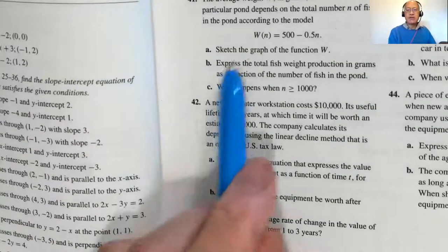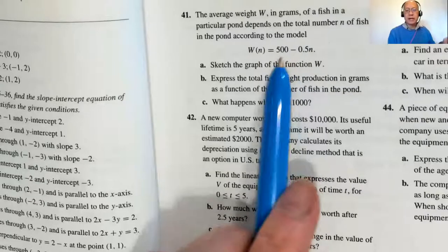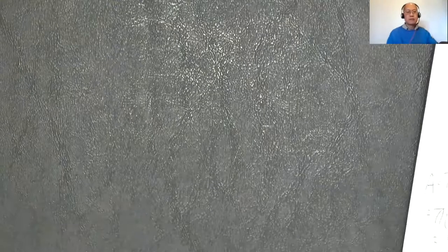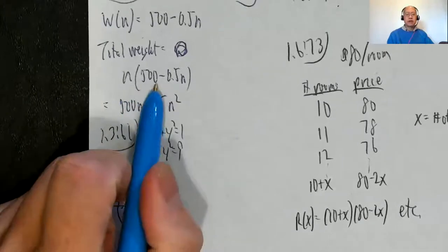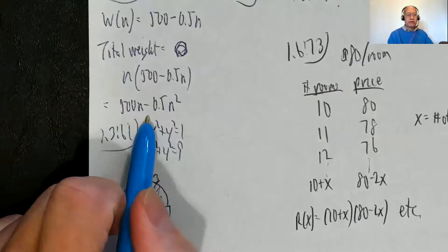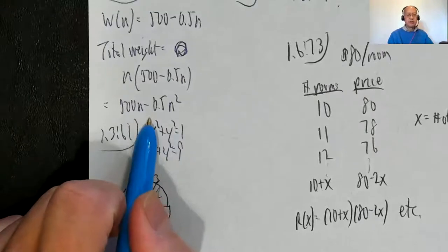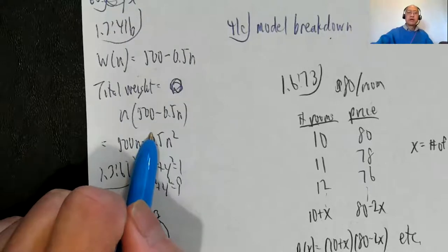For the total weight, that's the average weight times the number of fish. So I take W(N) and multiply by N. Total weight equals N times (500 − 0.5N), which comes out to 500N − 0.5N². That's the answer for 1.7 problem 41 part B.